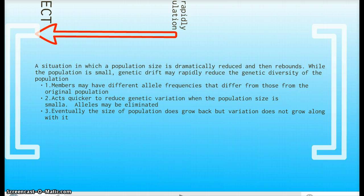What do I mean by rebound? Pretty much the population rises to its normal level. While the population is small, genetic drift rapidly reduces the genetic diversity, hence reduces genetic variation of the population.